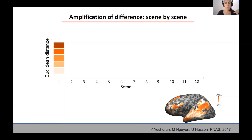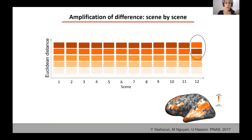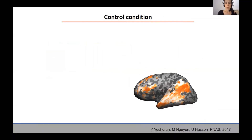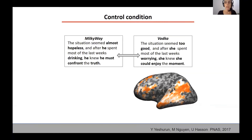We also found this amplification pattern for the second scene, and it was true for 11 out of the 12 scenes. Only in the last scene did we see a small gap in this ranking. So we know that this amplification was not due to one part of the story, but held true for the vast majority of the story. We observed this increasingly divergent neural response across the cortical processing hierarchy during the processing of two distinct narratives that vary only in a small number of words — for example, changing 'almost hopeless' to 'too good,' changing 'he' to 'she,' or changing 'drinking' to 'worry.' However, it could be that any change in a word would be amplified from early sensory regions to higher order regions, so we wanted to test whether this gradient is specifically due to the change in narrative.